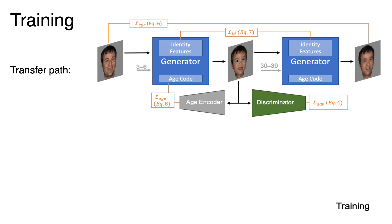Our network is trained with the following procedure. In the first forward pass, we select an image, transform it to a different age class, and pass it to a discriminator to make the result look realistic. To enforce a connection between image space and age space, we also map the generated image to the latent age space using an age encoder, and minimize the L1 distance between the age encoder output and the target age latent code.